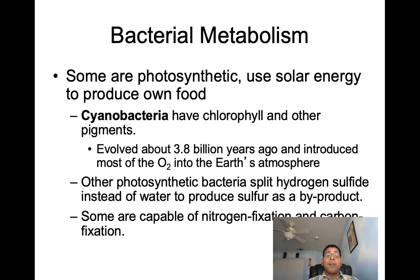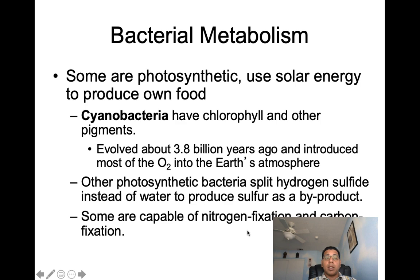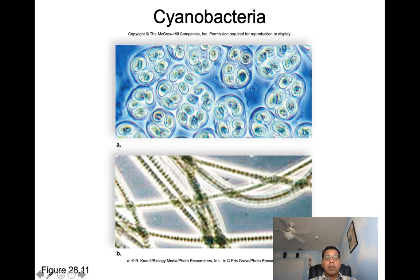Some bacteria are photosynthesizers and use solar energy to produce their own food — for example, cyanobacteria, which have chlorophyll and other pigments. Cyanobacteria evolved about 3.8 billion years ago and introduced most of the oxygen to Earth's atmosphere. Other photosynthetic bacteria split hydrogen sulfide instead of water, producing sulfur as a byproduct. Some bacteria are also capable of nitrogen fixation and carbon fixation.